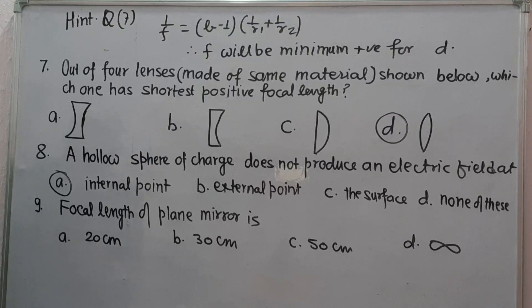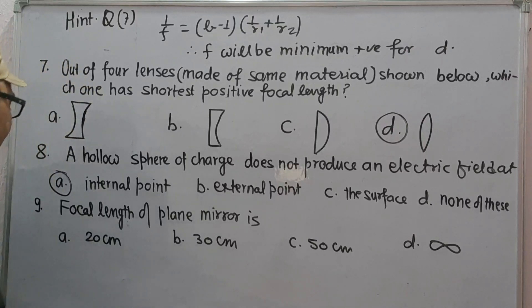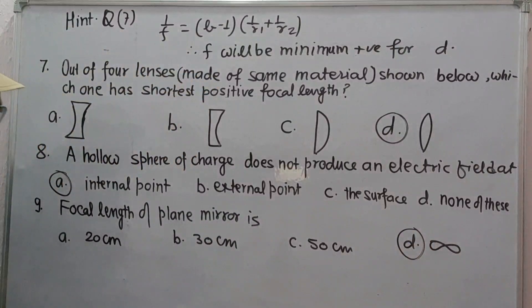Question number 9: focal length of a plane mirror is - these are the options. We know that the focal length and radius of curvature of plane mirror is infinity, therefore the correct option will be D.